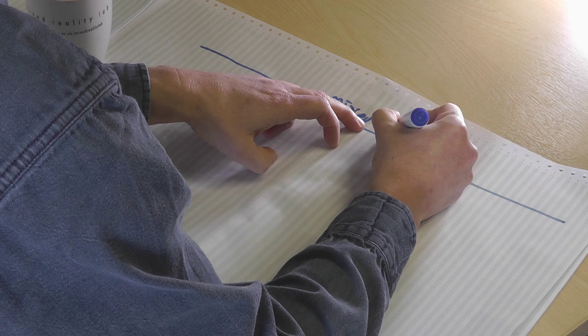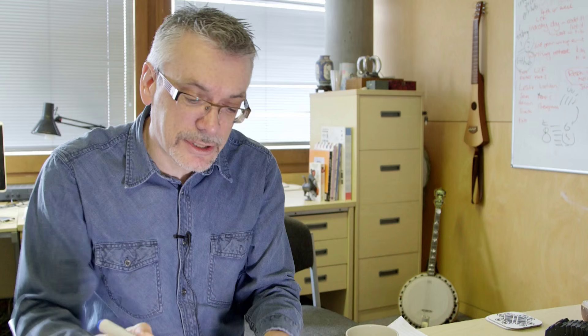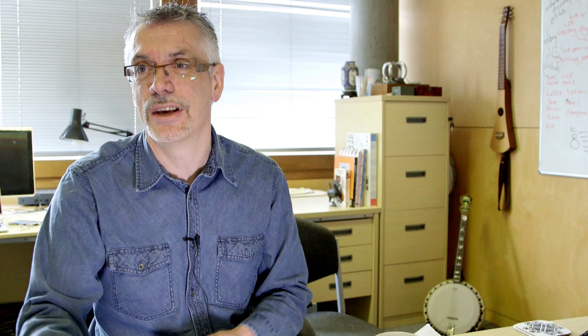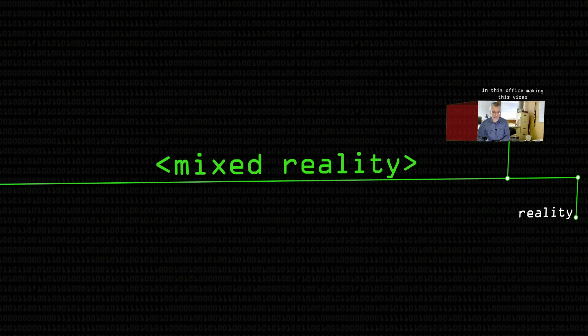Here is the universe of mixed reality. To understand what this line means, it's a good idea to look at the endpoints. At this end, we'll call it physical reality or everyday reality - the everyday physical world, ideally pre-1950, no computers, no digital. At the other end, here's virtual reality. In the sense that virtual reality is an illusion, you're trying to give someone the sense that they have left the physical world behind and been transported into a digital world created by the computer, and they've become immersed in this world.